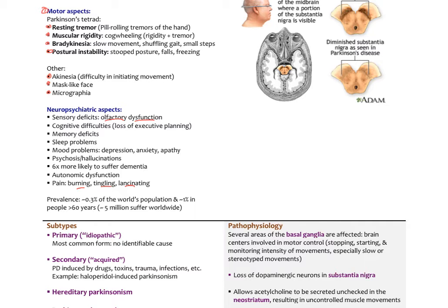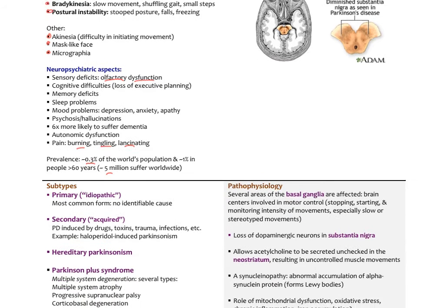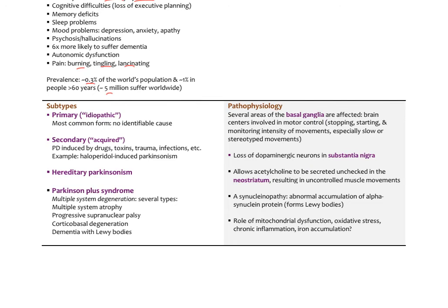The prevalence of Parkinson's is estimated at about 0.3% of the world's population and about 1% of all people over 60 — roughly 5 million people worldwide. There are several types: the primary idiopathic type is most common with no identifiable cause. Secondary or acquired Parkinsonism results from different drugs, toxins, trauma, or infections.